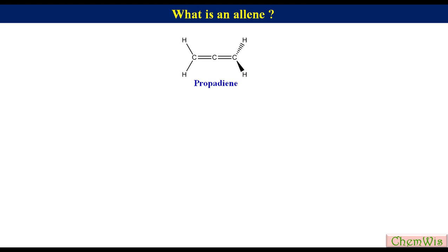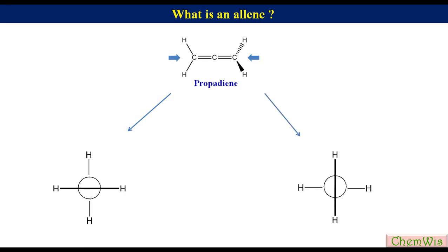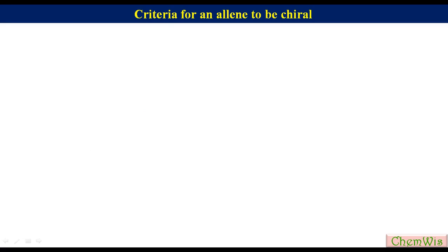It would be easier to understand this point by Newman projection formula. If we view the molecule from the left, the Newman projection will look like this. If we view the molecule from the right, the Newman projection will look like this. Here we can see that the dihedral angle between the two HCH planes is 90 degrees.